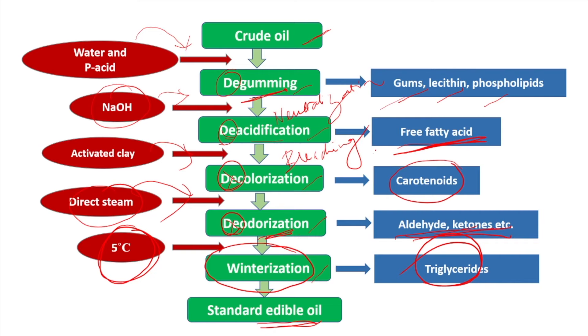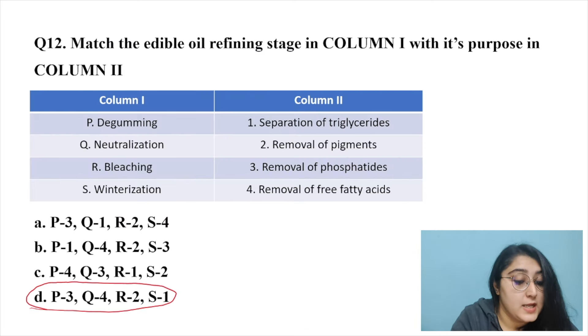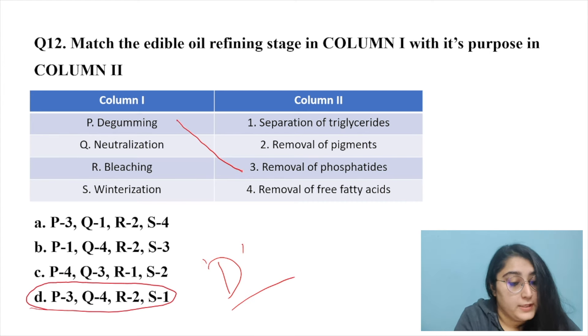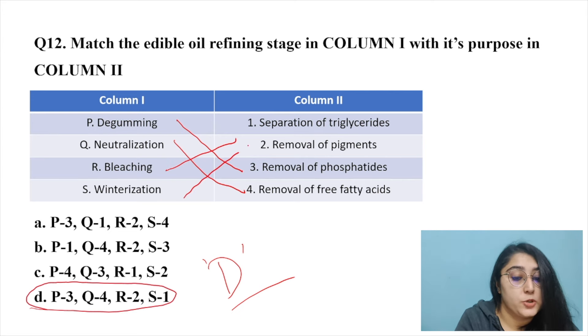Therefore the correct answer is option D: degumming separates phosphatides, neutralization removes free fatty acids, bleaching removes pigments, and winterization separates triglycerides. With this we end the video. We hope it was helpful for your GATE preparation. Please like, share, and subscribe to our channel for more upcoming videos from Food Emmy. Thank you for watching.